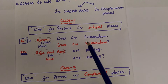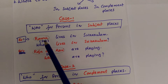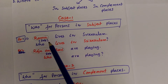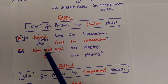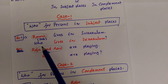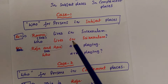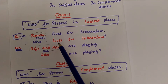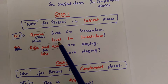Example: 'Ramu lives in Shrikakulam.' Here, Ramu is the person in the subject place. So, Ramu is removed and in that place 'who' is written. Then we get the answer: 'Who lives in Shrikakulam?' Here, the verb 'lives' is not changed into interrogative form.